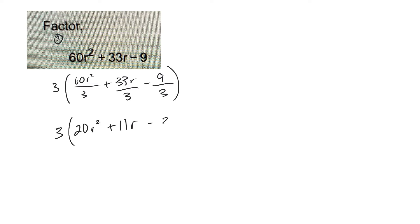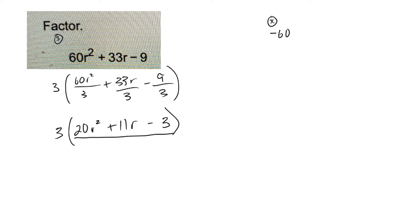That gives us 3 times the quantity 20R squared plus 11R minus 3. Now that I've taken the 3 out, I can do the AC method with the remaining trinomial. I'm now just dealing with 20 times 3, which is negative 60. So I need two numbers that multiply to negative 60 and add to 11.